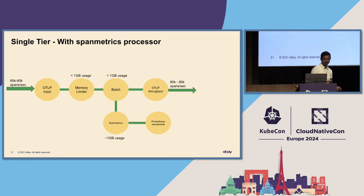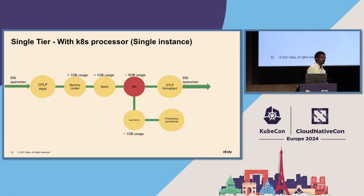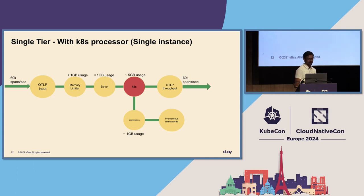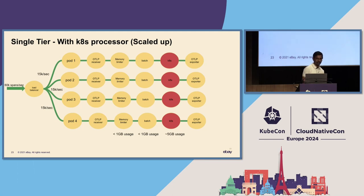We tried adding the span metrics processor to see how throughput looks. It's fine for a single instance, but for multiple instances we'll get to that shortly. The next one is Kubernetes metadata enrichment. On a single instance, we saw that pulling the entire cluster's worth of pod metadata along with namespace metadata had a 5 GB overhead. When we add multiple instances, even though we're shedding spans evenly across instances, the overhead of each Kubernetes enrichment processor remains the same because every instance has to anticipate every pod's data — it has to hold all pod metadata in memory.